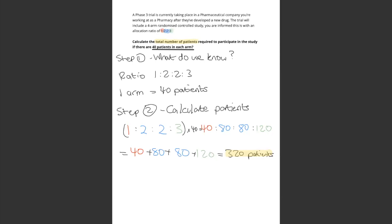Hi guys, welcome back to question 32. This is an example of a randomised control study in a clinical trial. This type of question is becoming more and more popular in the GPT exam.